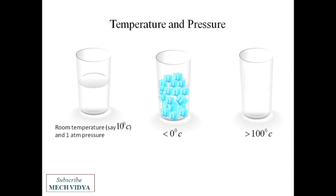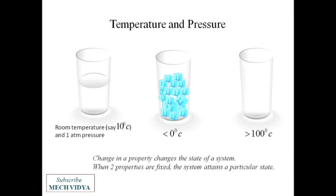What we see is that change in a property changes the state of a system, and when two properties are fixed, the system attains a particular state. Now one thing you have to remember: change of state does not always mean that the system has to change its phase.